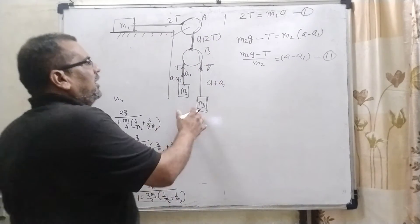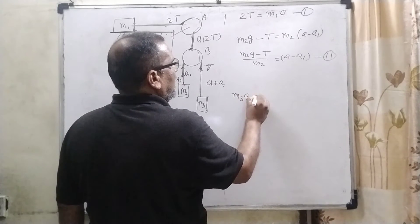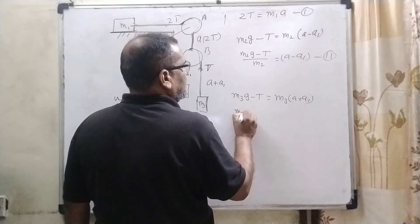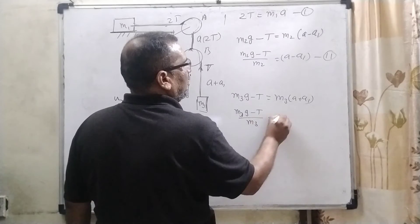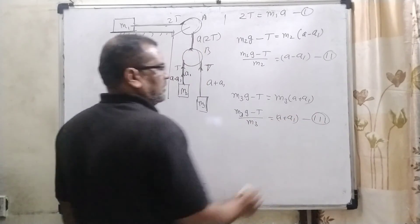For M3, whole system is falling downward direction. So therefore, M3 G minus T upon M3 equal to M3 A plus A1, then M3 G minus T upon M3 equal to A plus A1. It is third equation.